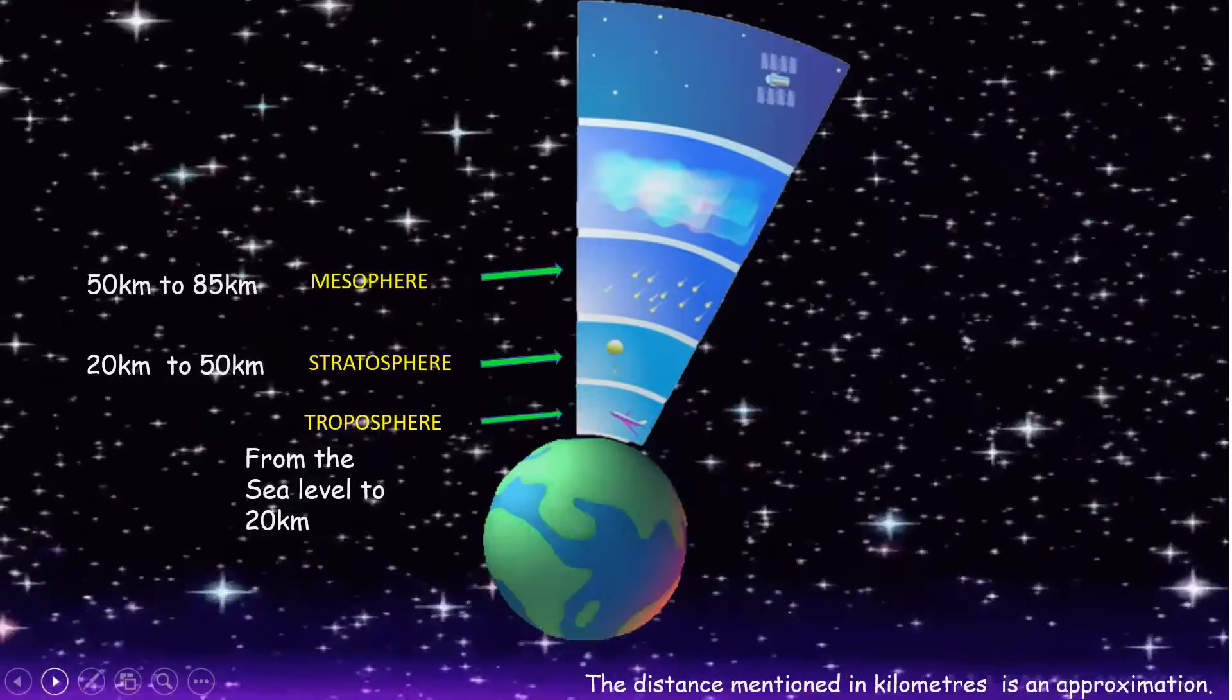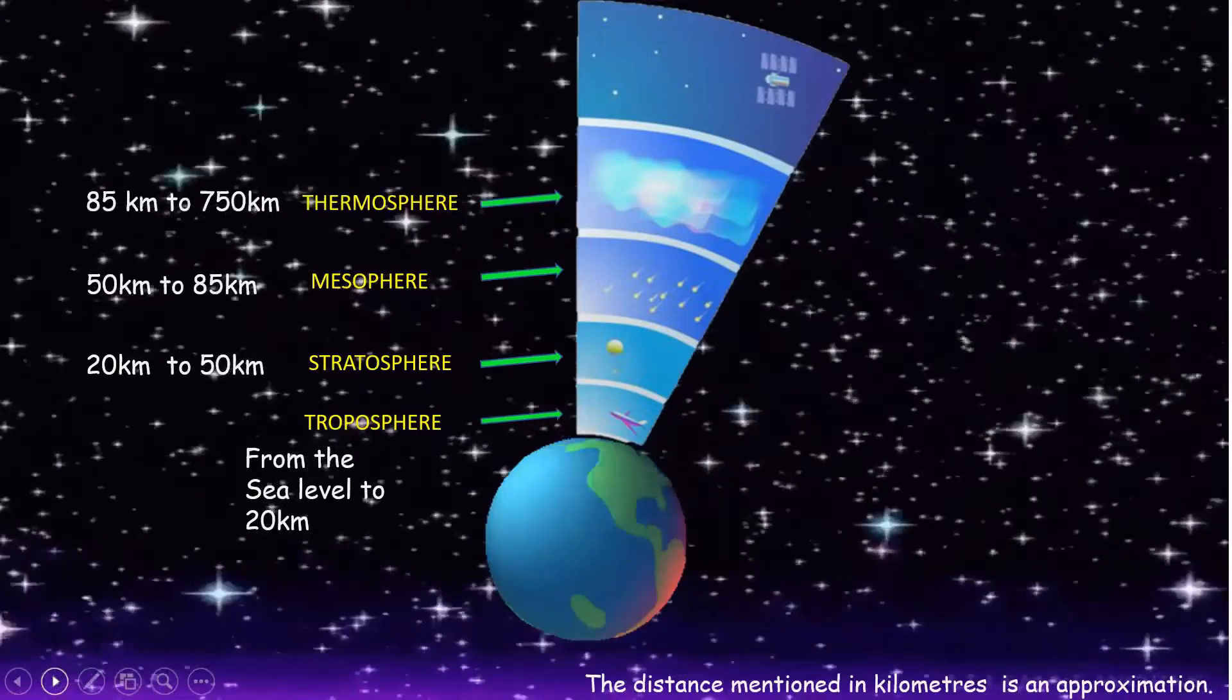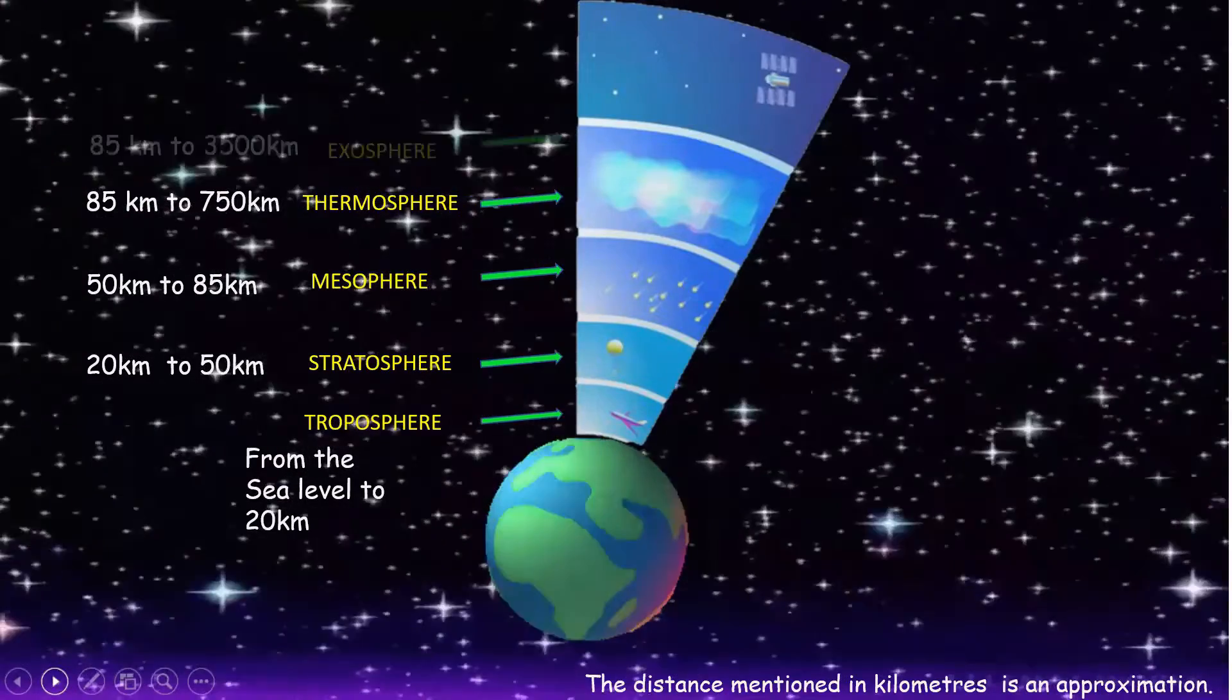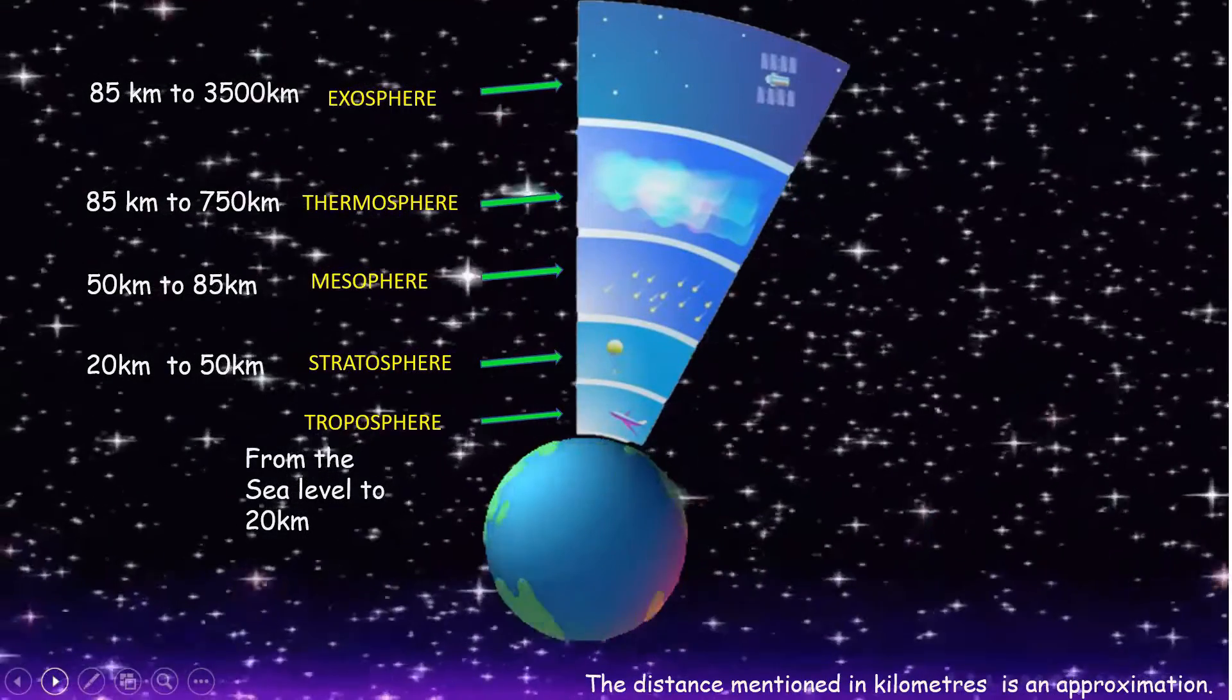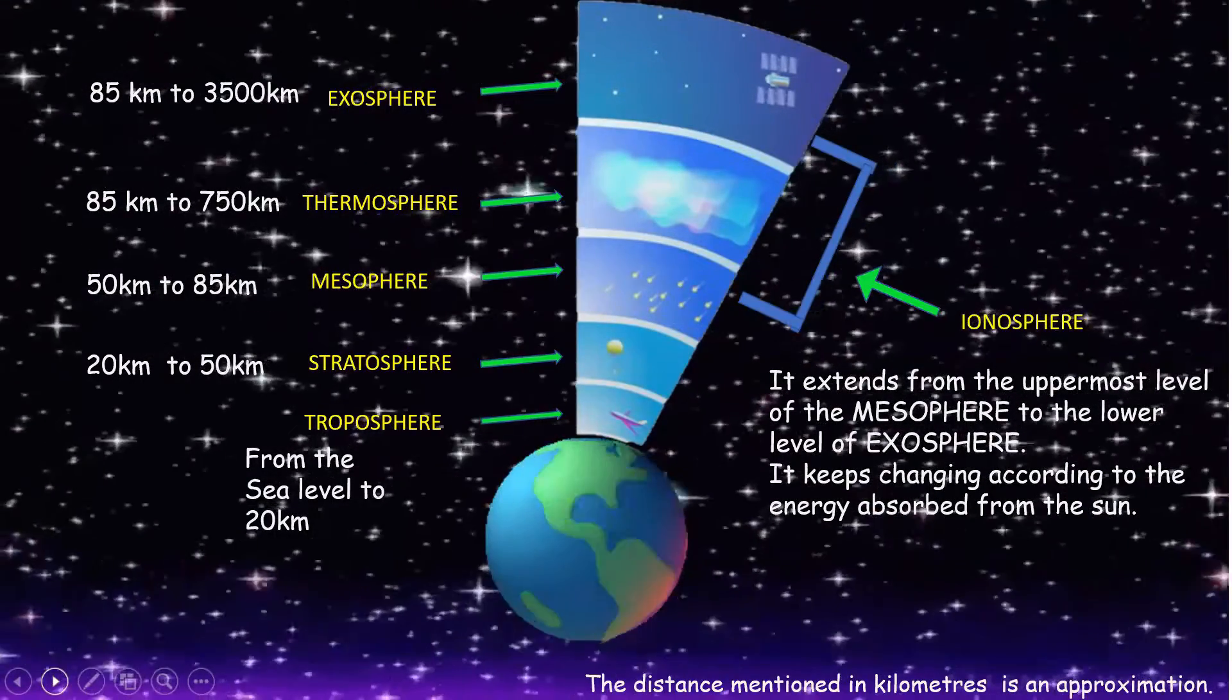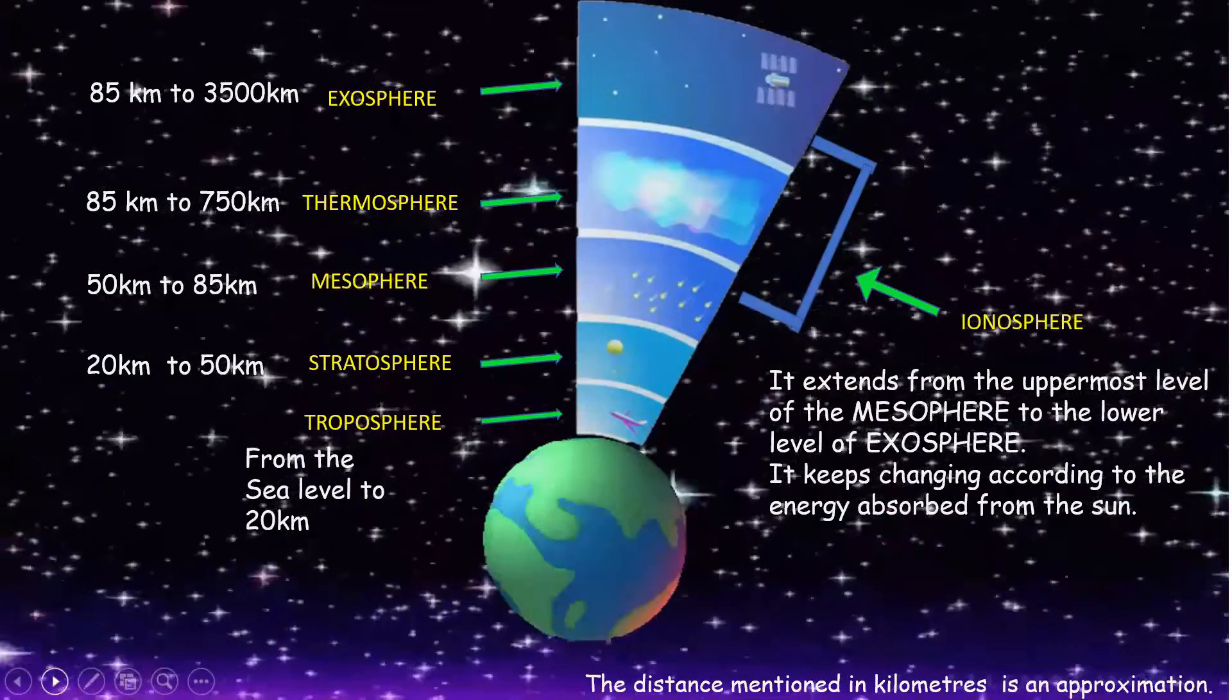The third layer called as the mesosphere extends from 50 kilometers to 85 kilometers. Then comes the thermosphere which extends from 85 kilometers to 750 kilometers up in the space. And lastly comes the exosphere which extends from 85 kilometers to about 3500 kilometers up in the space. The ionosphere extends from the uppermost level of the mesosphere to the lower level of the exosphere. It keeps changing according to the energy absorbed by the sun.